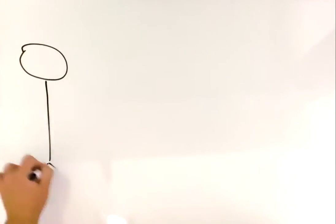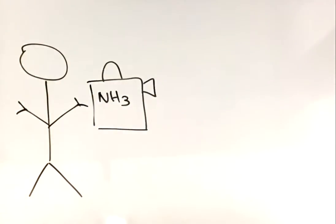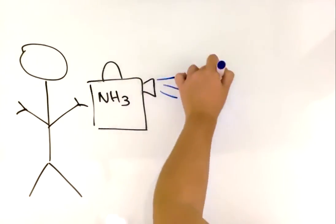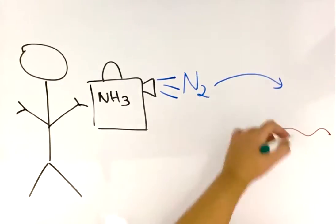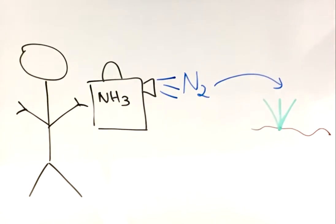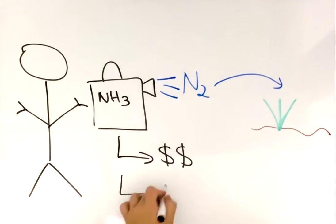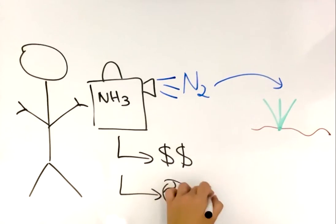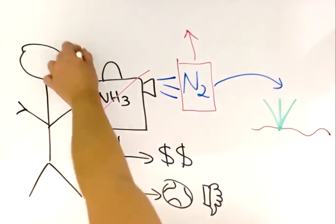Farmers have long used fertilizers to provide nitrogen to plants. However, using fertilizers is expensive and bad for the environment. So, is there a way to increase nitrogen fixation efficiency in plants without using fertilizer?